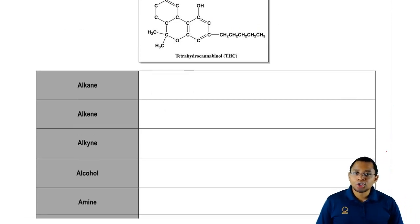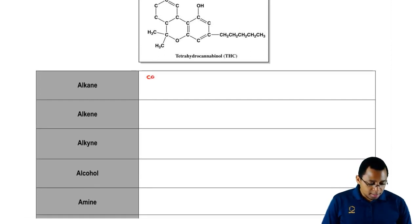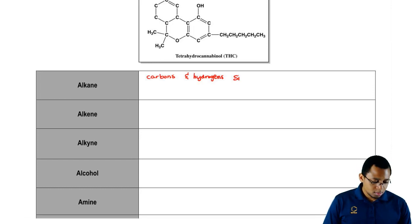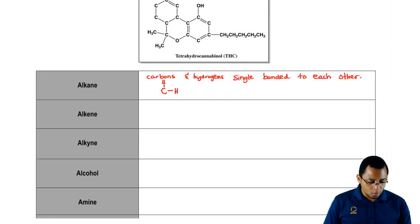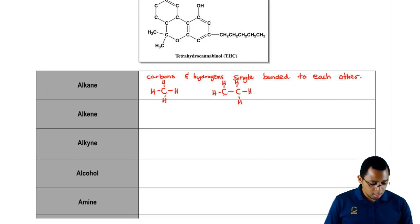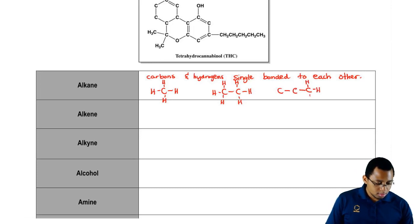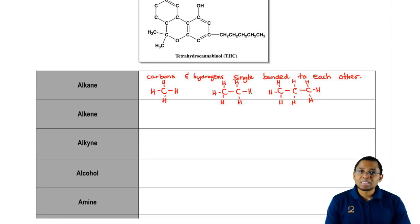The simplest type of functional group is known as an alkane. An alkane is simply carbons and hydrogens single bonded to each other — for example, a carbon connected to four hydrogens, or two carbons connected to each other and bonded to hydrogens. It gets longer and longer. That's the simplest type of functional group we can have.